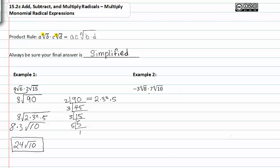In example two we do the same thing. First we notice that our indexes match, so we can move on to multiplying the values in front of the radical. Negative three times seven is negative twenty-one, and inside the radicals eight times ten is eighty.